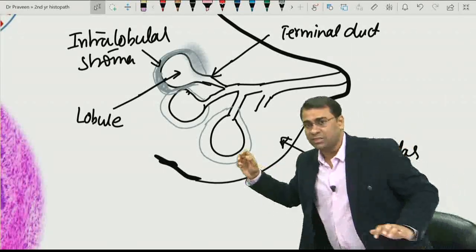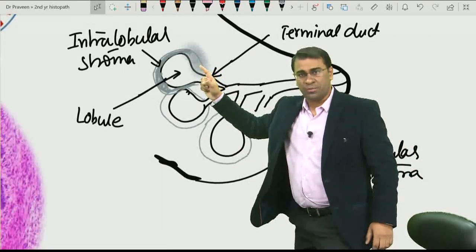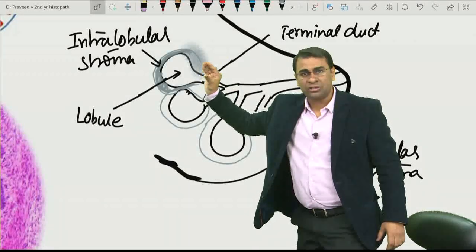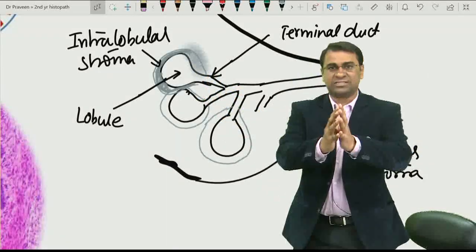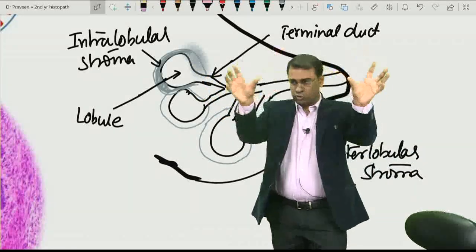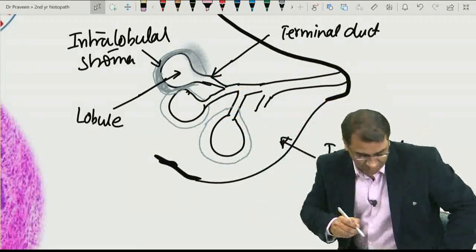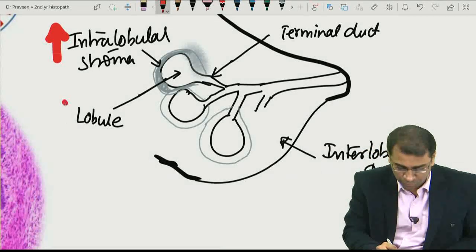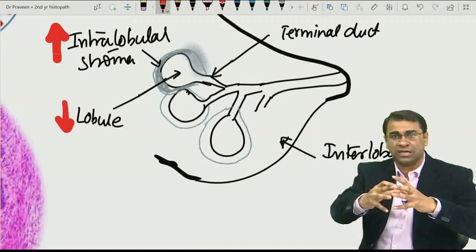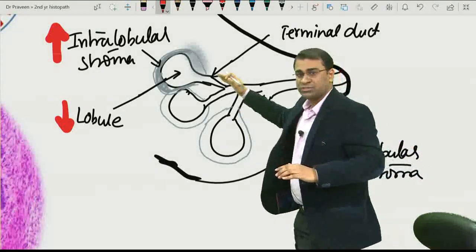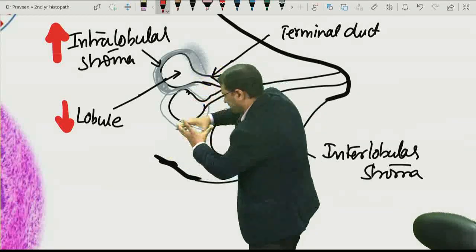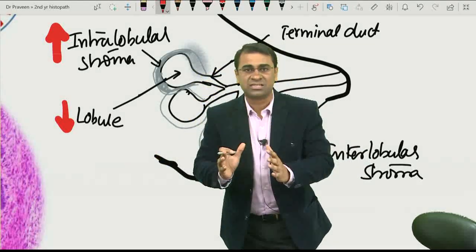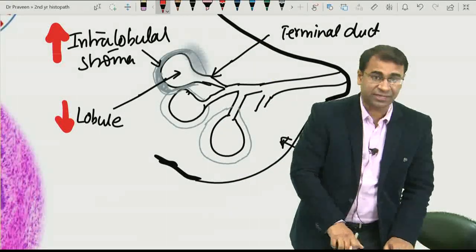But, when a tumour comes from this intralobular stroma, when this stroma increases, what will happen to these lobules? The lobule will decrease in size. So, with this stroma, which is basically the intralobular stroma, when this stroma increases, what happens to lobule? The lobule becomes decreased, because this stroma here will compress the lobule.